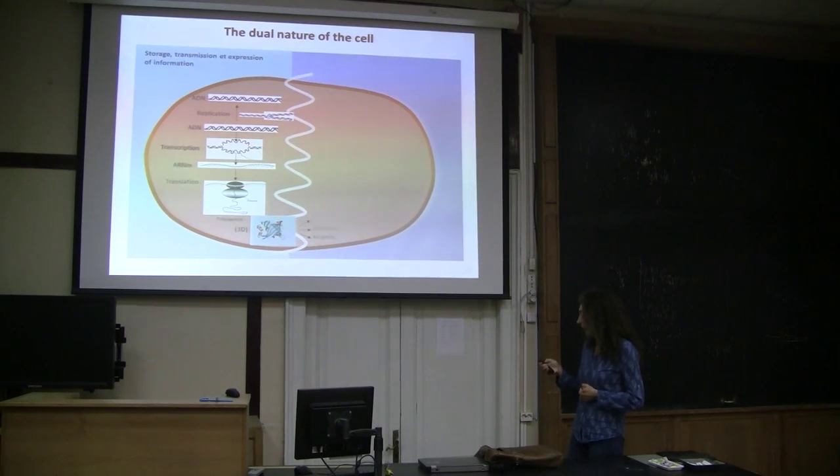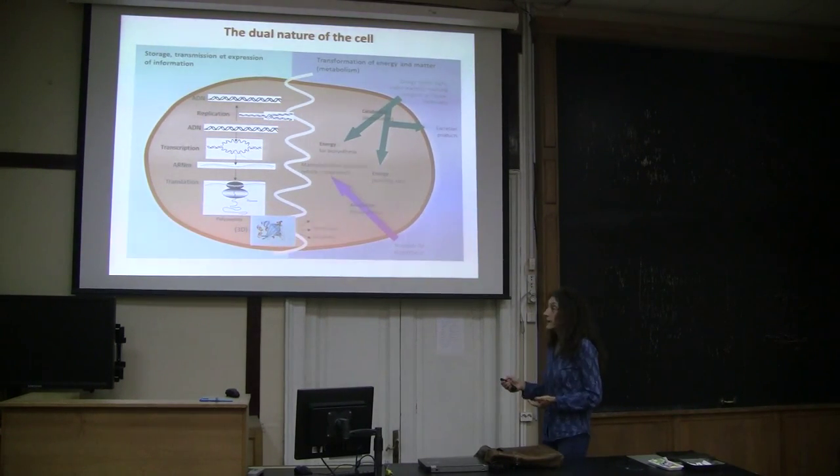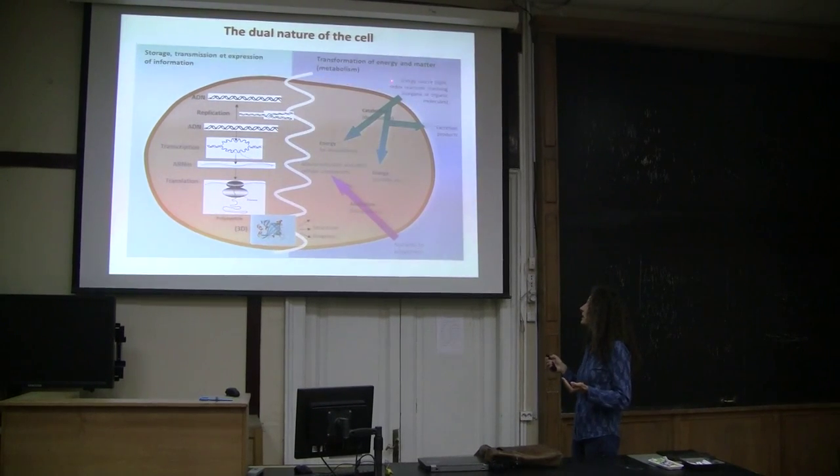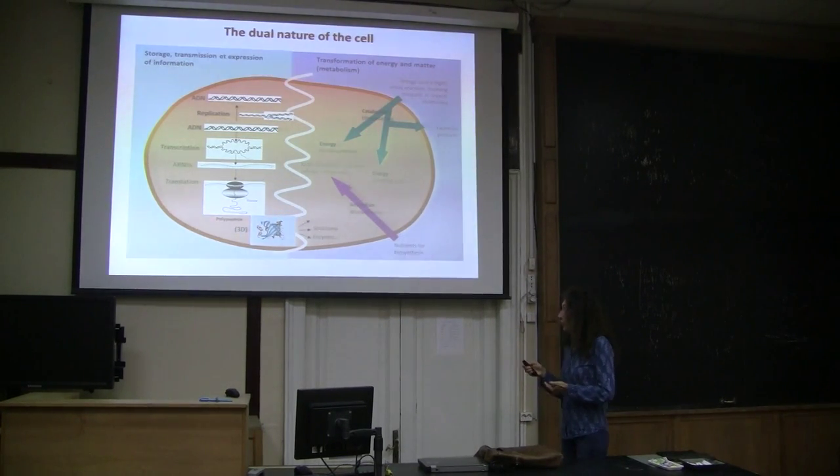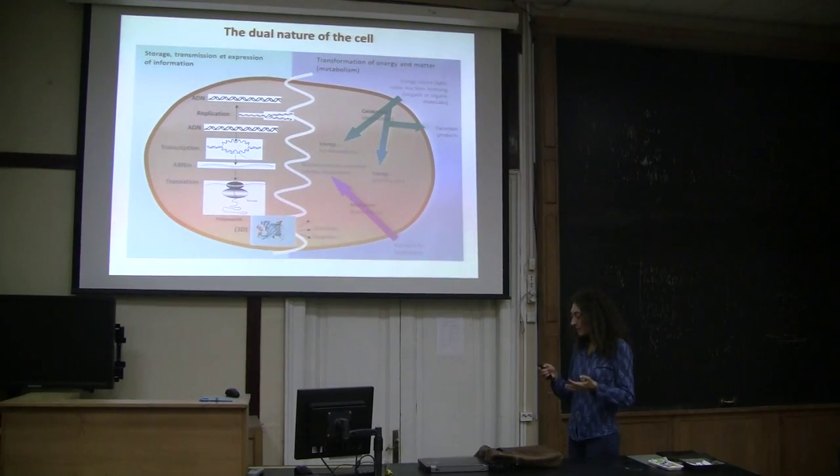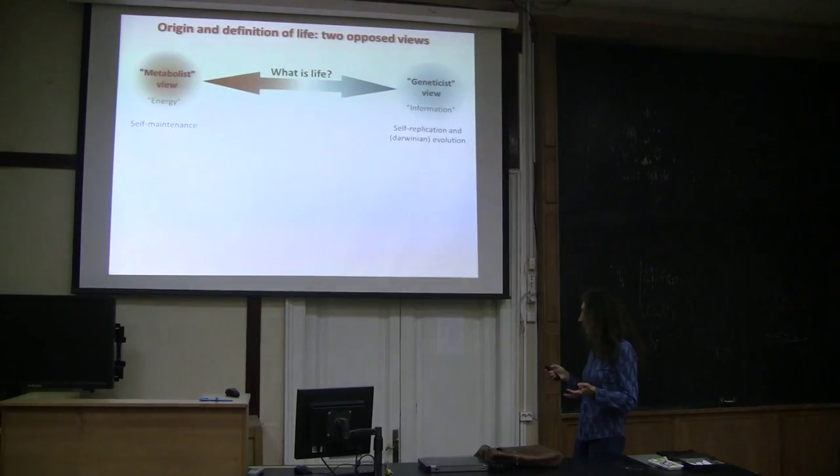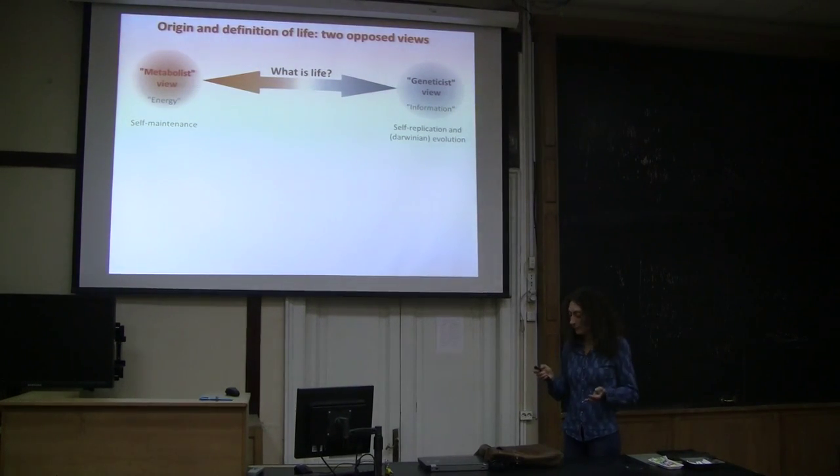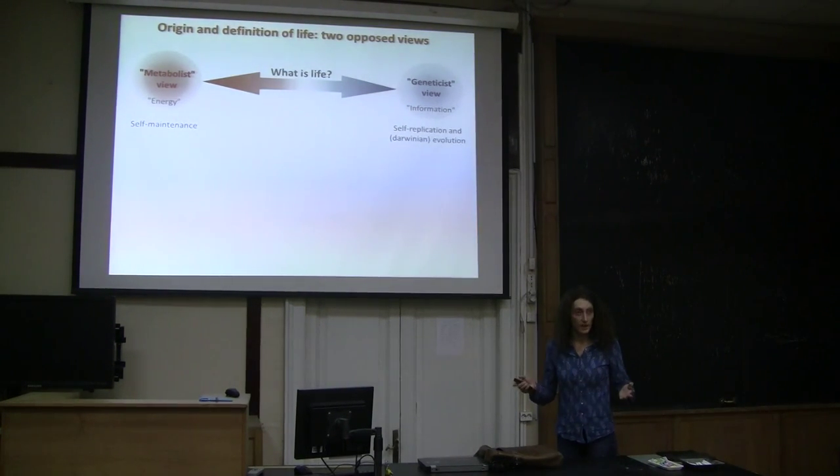And on the other hand, cells have also functional properties that are called metabolism, because they are able to transform energy and matter for their needs. So these two properties are somehow in the two major schools with regards to the definition of life. So there are many, many definitions of life. Many of them are very descriptive, but when you take them to essentials, those that are minimal definitions that would really tackle the essential properties of life,